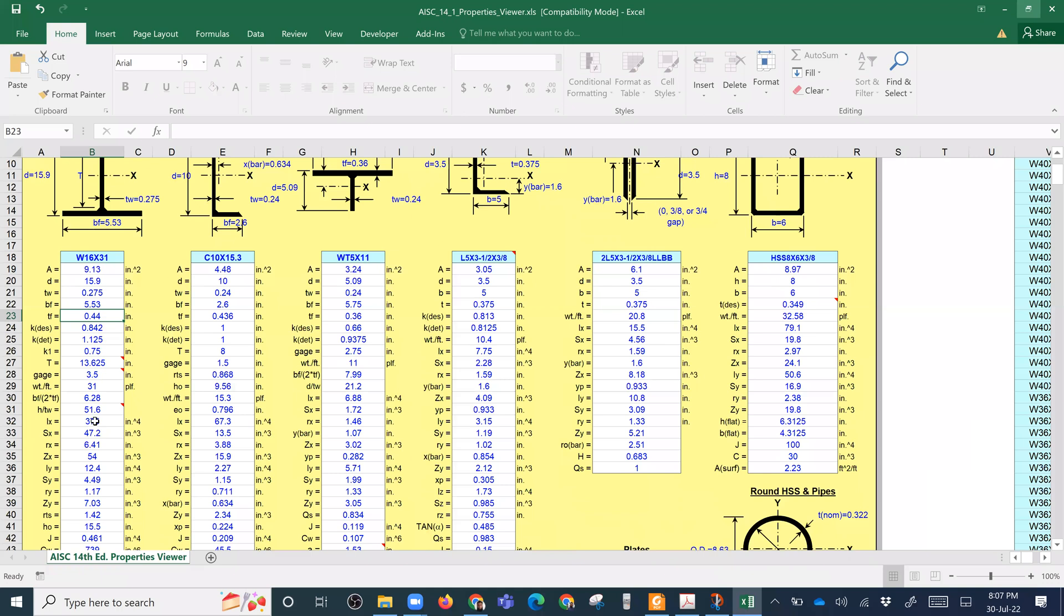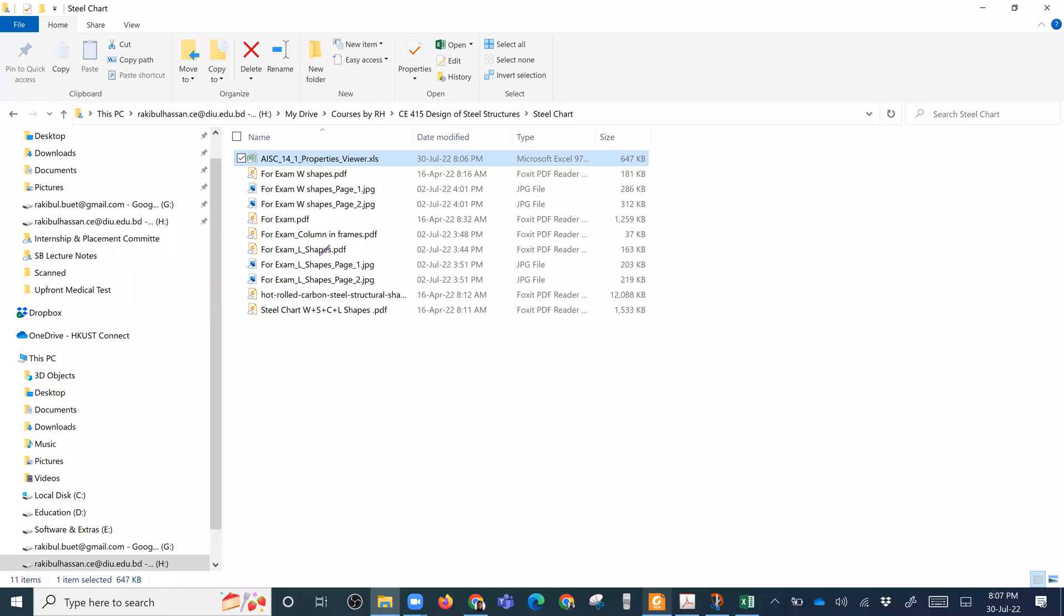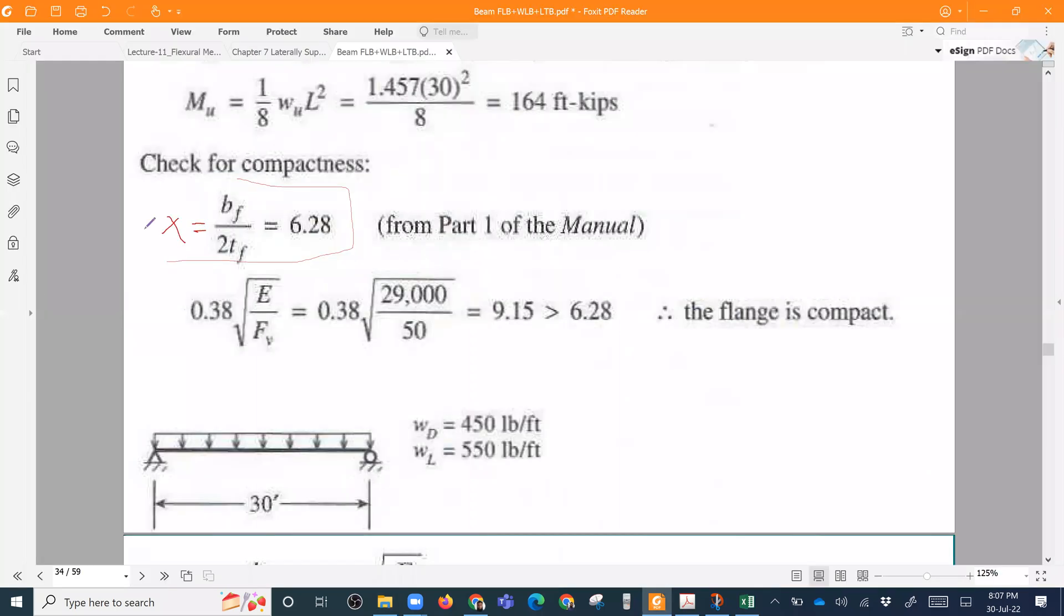So bf by 2tf, you can easily divide. So that means our section is given, so this is a given value.